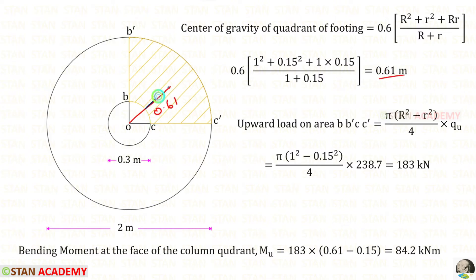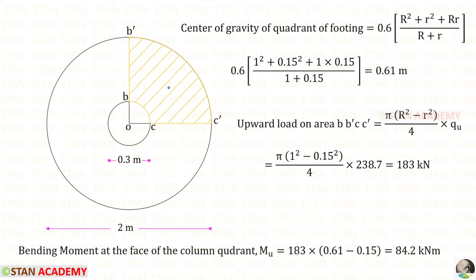We need only the distance from the CG to the column face. The column radius is 0.15 m, so the moment arm is 0.61 minus 0.15. For the bending moment, we get 84.2 kN·m.